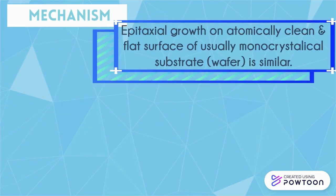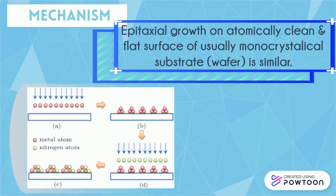Epitaxial growth on an atomically clean and flat surface of a usually monocrystalline substrate is similar. As you can see in the photo on the left, metal and nitrogen atoms combine to form a layer of atoms.